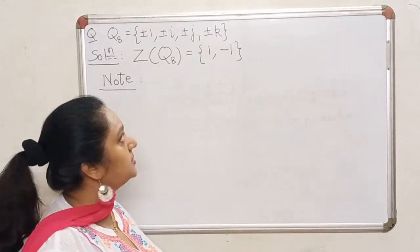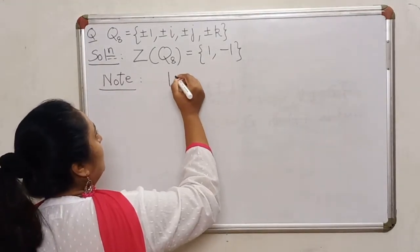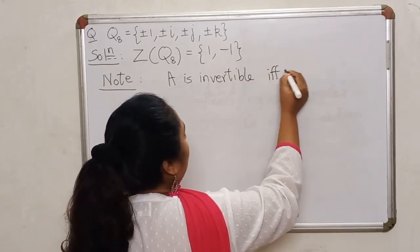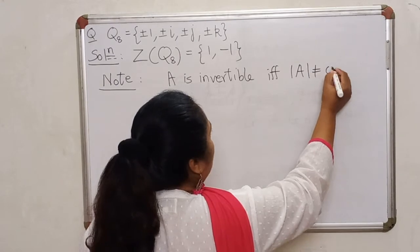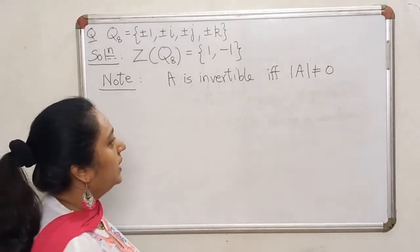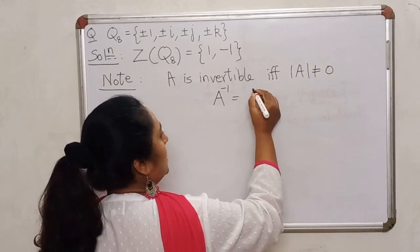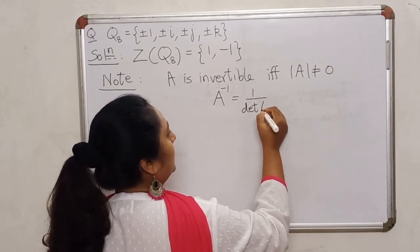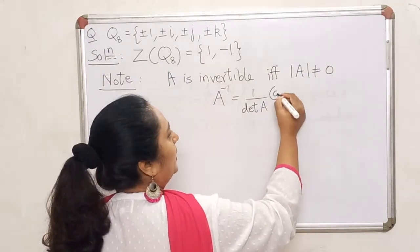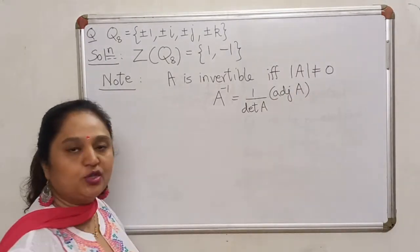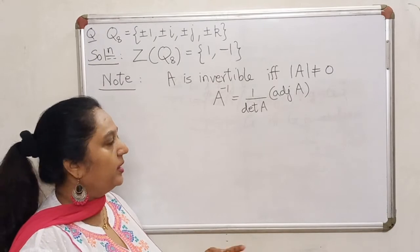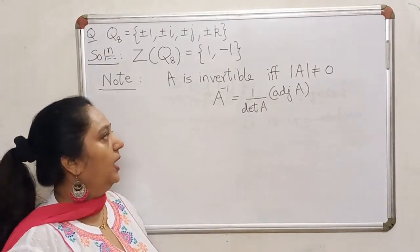For square matrices, a matrix is invertible if and only if it is non-singular, meaning the determinant is not equal to 0. In this case, we also have a formula for the inverse: A⁻¹ = (1/det A) × adjoint of A. The adjoint is nothing but the transpose of the cofactor matrix. So you can brush up on matrix algebra to find out what the adjoint is.